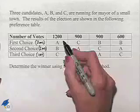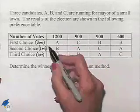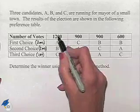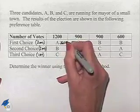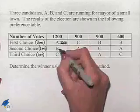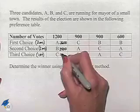Now we'll take the number of votes and multiply by the number of points in each case. So we're going to multiply three times 1,200 to give A 3,600 points in this column. Two times 1,200 is 2,400, and one times 1,200 is 1,200.